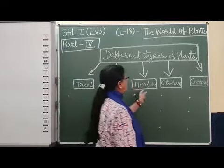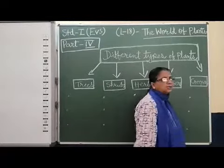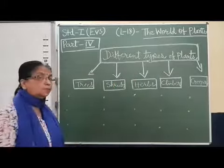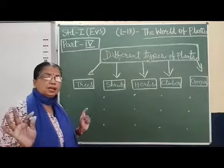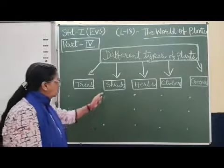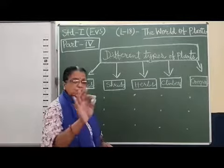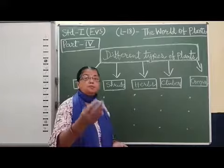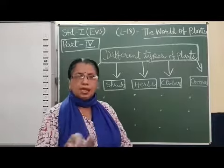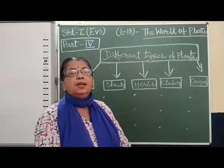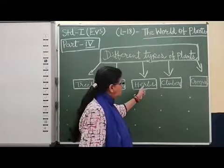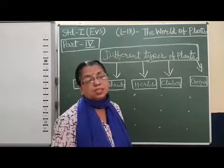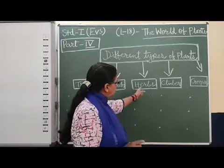So these are the types of plants: trees, shrubs, herbs, climbers, creepers. Now, how can we identify trees? Very big, strong plants are called trees. How can we identify shrubs? Very small plant but strong brown stem. That way we can identify shrubs. Herbs, very small plant and weak also, soft stem.